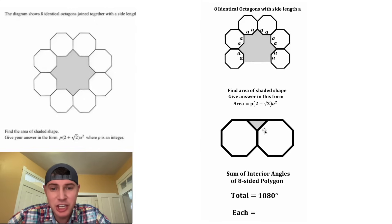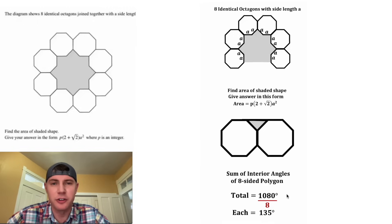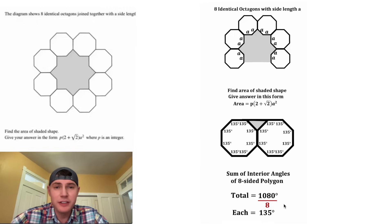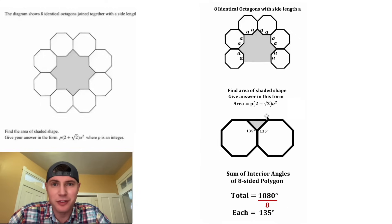And then to figure out the size of each of these angles, we would divide that 1080 by 8 to get 135 degrees. So all of these angles are 135 degrees. We're gonna want to focus on these two angles. We can get rid of the rest of them.